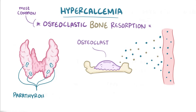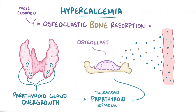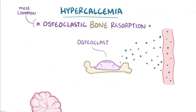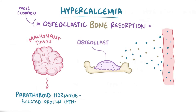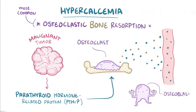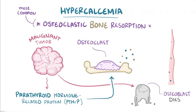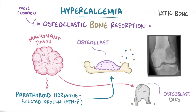This might happen when the parathyroid gland becomes overgrown and releases more parathyroid hormone. Another well-known cause of hypercalcemia are malignant tumors, some of which secrete parathyroid-hormone-related protein, or PTHrP, a hormone that mimics the effect of parathyroid hormone, which stimulates the osteoclasts. Some tumors also cause osteoblasts — bone-building cells — to die off.